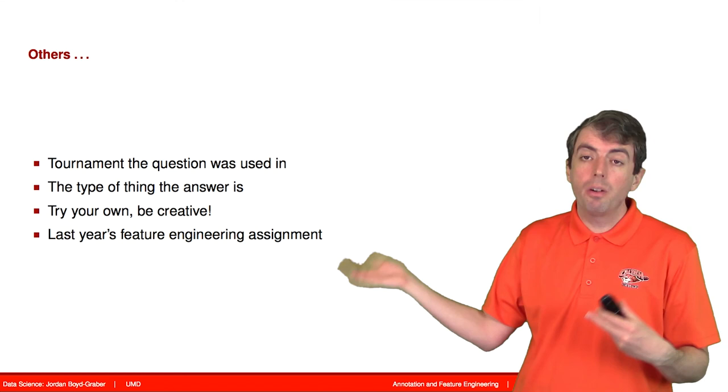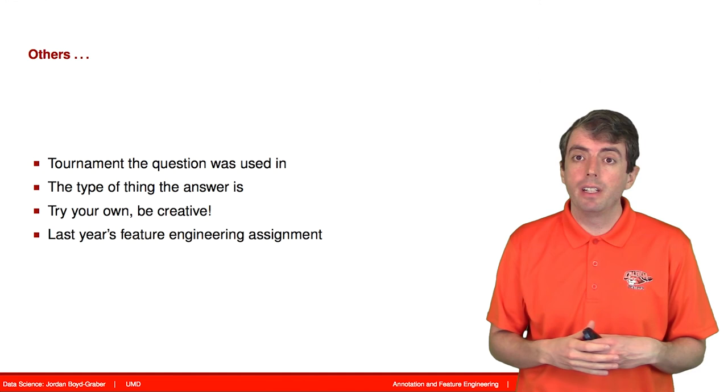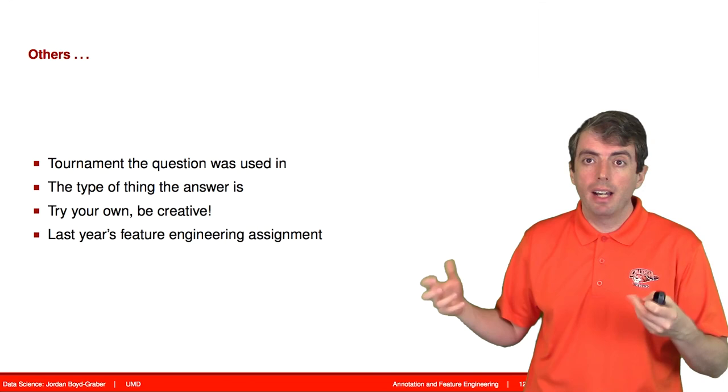So when I use this as a homework, people did a lot of creative things like what tournament the question appeared in, who wrote the question. You can also think of a lot of very interesting things that you could use as your own feature on this kind of data. The bottom line for this and any other feature engineering exercise is to be creative, to understand your data, and try to create features that capture what's going on in your data so that your classifier can do a better job of processing the data and create good answers and good results.